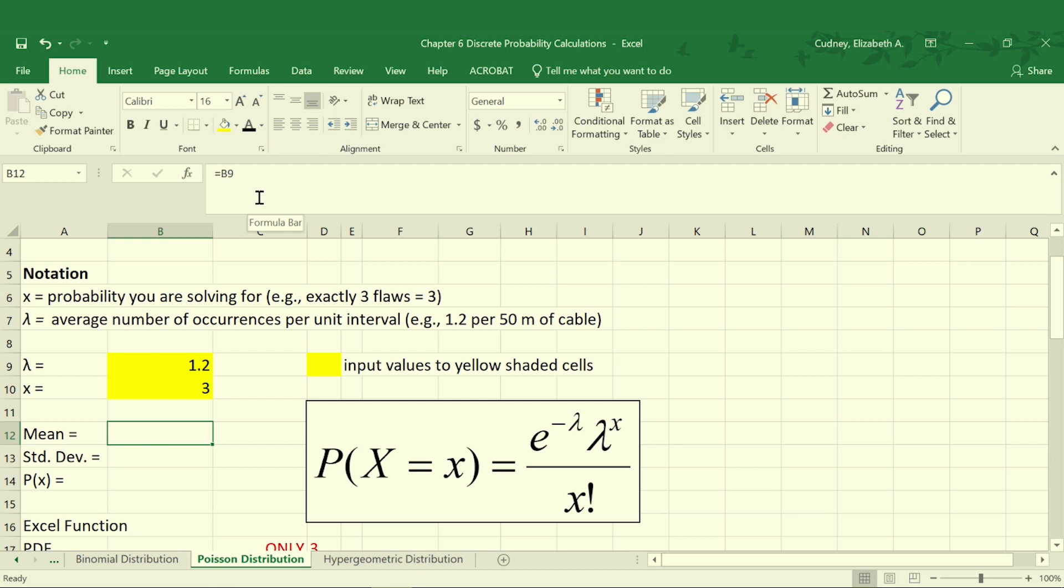For the Poisson distribution, the mean is equal to our lambda value. We already know the average number of defects, which is our mean, which is 1.2. And our standard deviation is equal to the square root of our mean. So in this case, the square root of cell B9, which is the same as B12.